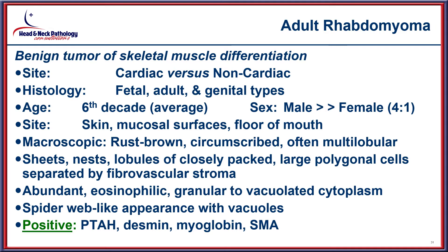The next lesion to consider is rhabdomyoma, divided into cardiac and non-cardiac, and based on histology into fetal, adult, and genital types. The adult rhabdomyoma is relevant to the present case, although it usually affects older patients with men much more commonly affected than women. They have a rust-brown appearance with sheets and lobules of closely packed polygonal cells separated by a fibrovascular stroma, with abundant granular to vacuolated cytoplasm creating a spiderweb-type appearance.